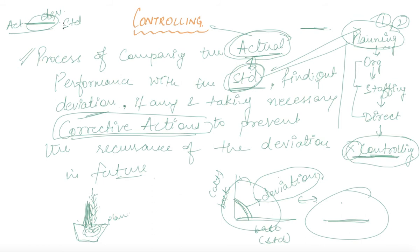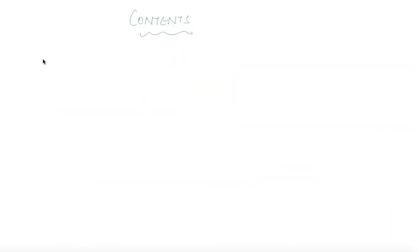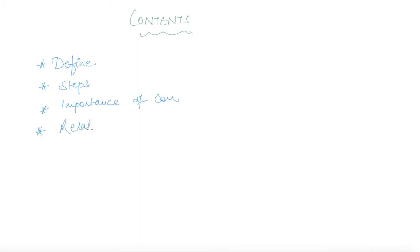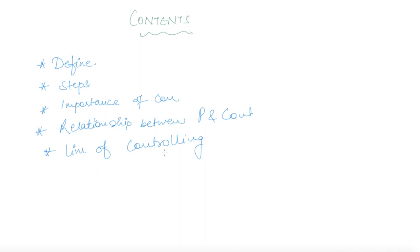Now let us discuss what further we are going to learn under this chapter. First, you will learn the definition of controlling. After that, steps of controlling — just as we covered steps of planning, organizing, staffing, and directing. Then the importance of controlling, and finally the relationship between planning and controlling, and also the limitations of controlling.